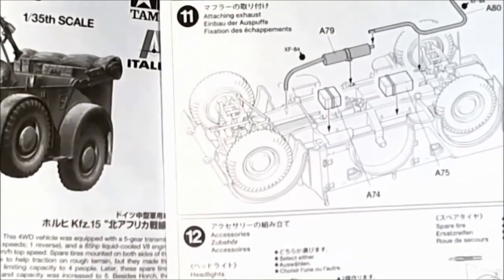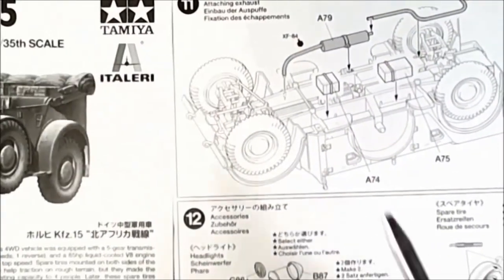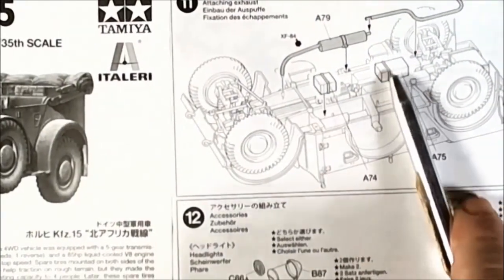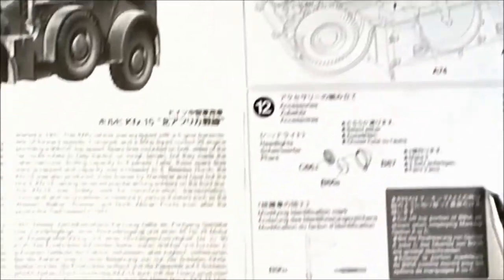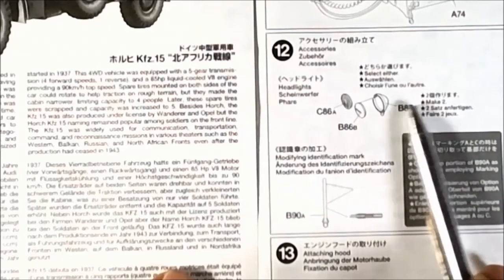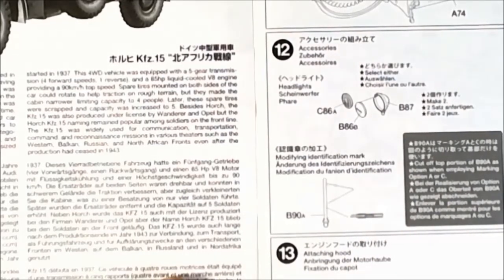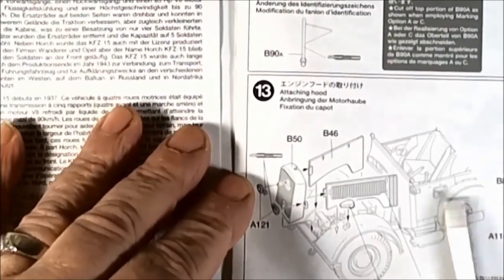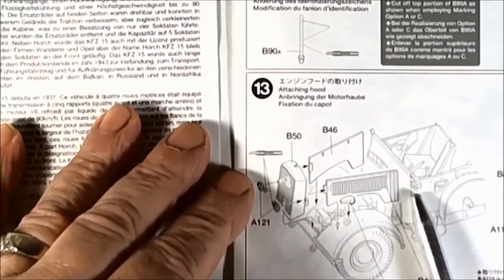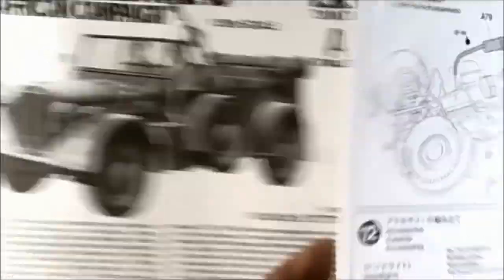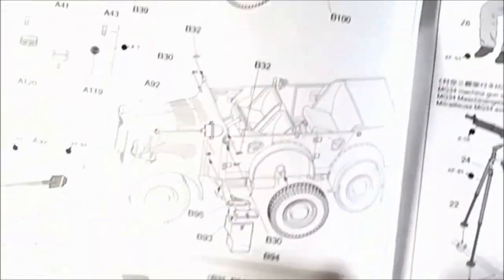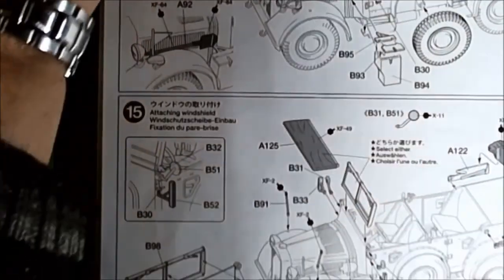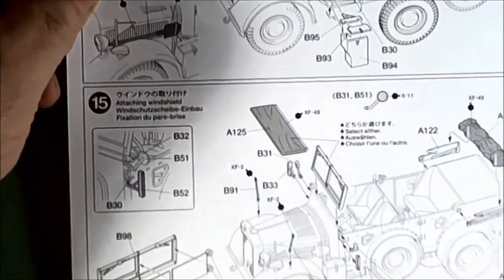Step number ten, putting the chassis onto the frame. Installing your exhaust over here and various boxes to the underside. Assembly of the headlights, whether we want to have them clear or cat's eyes. Applying the hood, which is interesting. And the grand total, we have fifteen steps to assemble this entire vehicle.